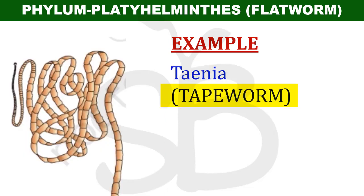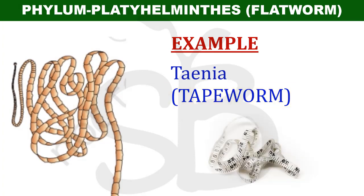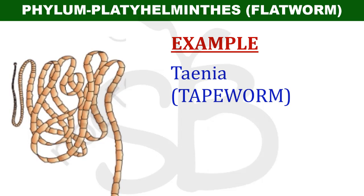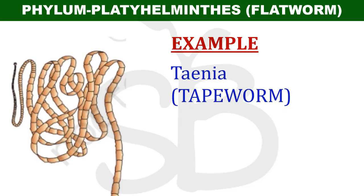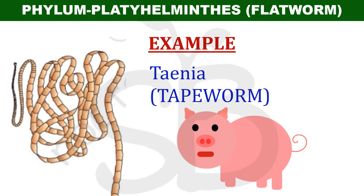Next is Taenia or tapeworm. Tapeworms are produced in segments and live in the intestines of humans and animals. This causes abdominal pain and a tendency to vomit. Tapeworms are naturally found inside the body and are used as an example of platyhelminthes parasites.